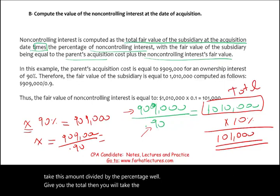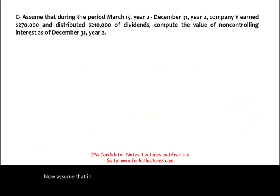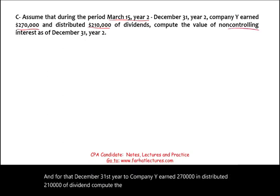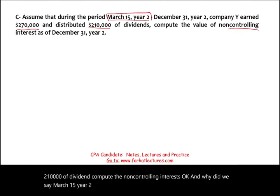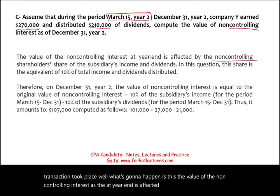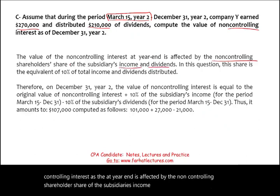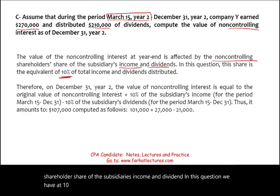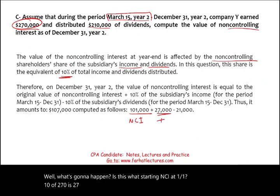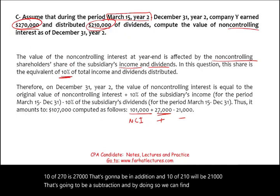Now assume that from March 15, year two through December 31, year two, company Y earned $270,000 and distributed $210,000 in dividends. The NCI balance is affected by its proportionate share. Starting NCI: $101,000. Add 10% × $270,000 = $27,000 (NCI share of income). Subtract 10% × $210,000 = $21,000 (NCI share of dividends). Ending NCI = $107,000.